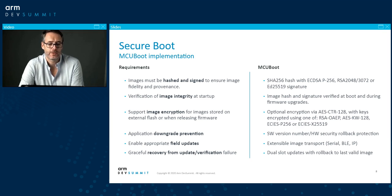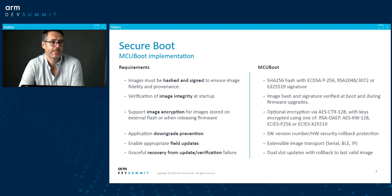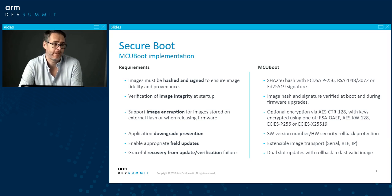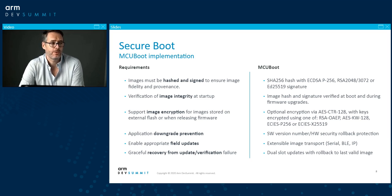In terms of how MCUboot meets these requirements: for hashing and signing, MCUboot generally uses a SHA-256 hash with ECDSA-P256, RSA-2K or 3K, or ED25519 signatures. For image integrity, the image hash and signature are both verified at boot and during firmware updates. For image encryption, you can optionally encrypt firmware images with AES-CTR-128. For downgrade prevention, the default uses a software version number baked into the firmware image, and optionally hardware security rollback protection if available in your SoC.